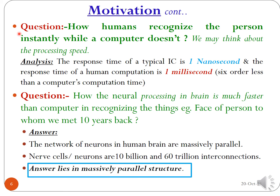The question arises: how does a human recognize a person instantly while a computer doesn't? We might think about processing speed. The response time of a typical IC is one nanosecond, while the response time of human neural computation is one millisecond — six orders of magnitude slower than a computer's computation. This means the computer should recognize the person much earlier than a human being, yet that is not what happens.